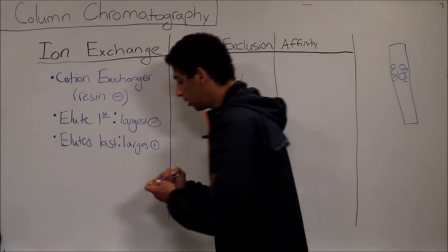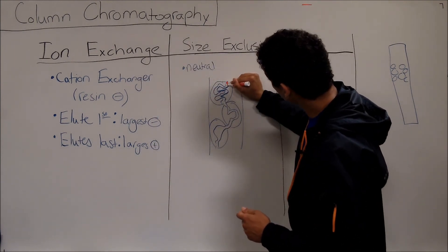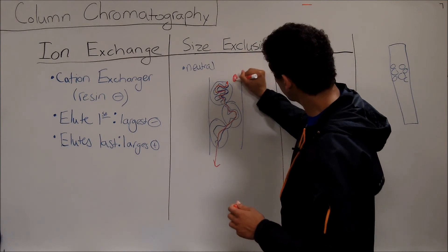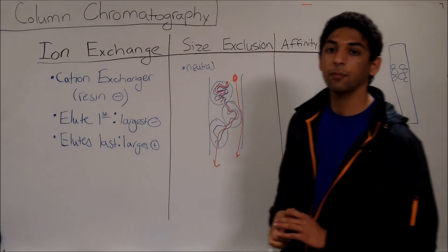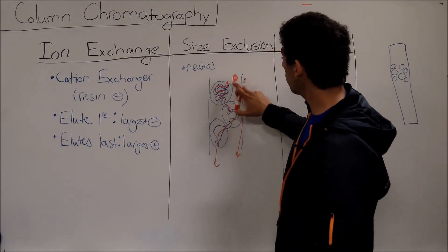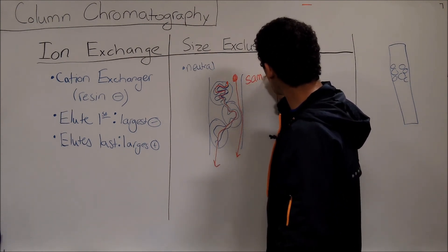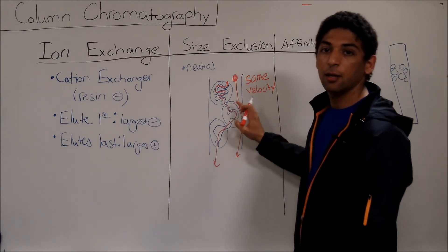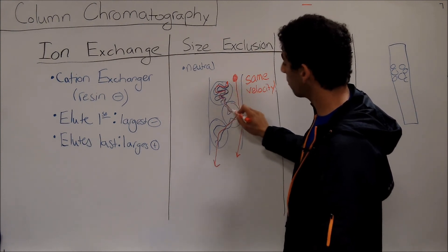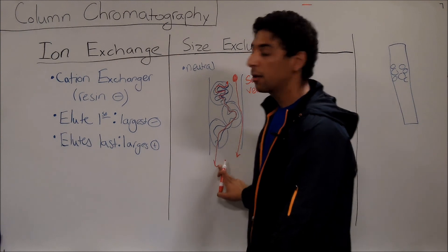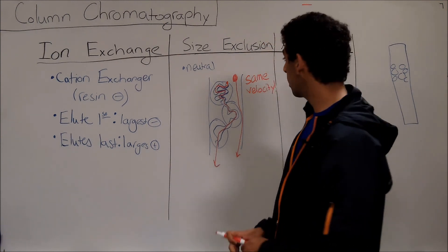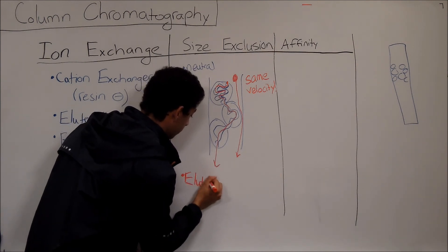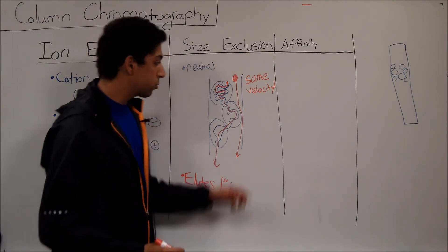The big molecules that don't fit in this path are just going to go around the resin and come out the bottom. The key here is that both the big molecules and the small molecules have the same velocity. Since they both have the same velocity, the one that has to travel the longest distance — the small one that takes the convoluted maze-like path — is going to take the longest time to get out. So the thing that elutes first would be the biggest molecules.